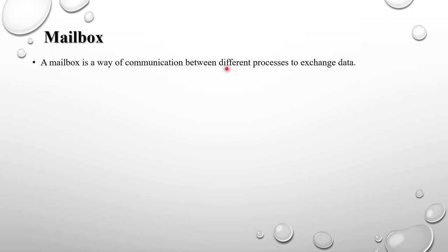A mailbox is a way of communication between different processes to exchange data. This mailbox is similar to a post box. With a post box, we put letters in and we get letters out — we use it to communicate between people staying in different places.